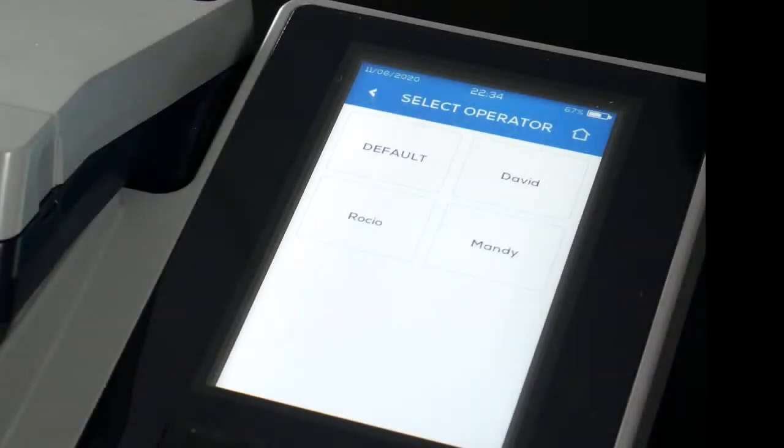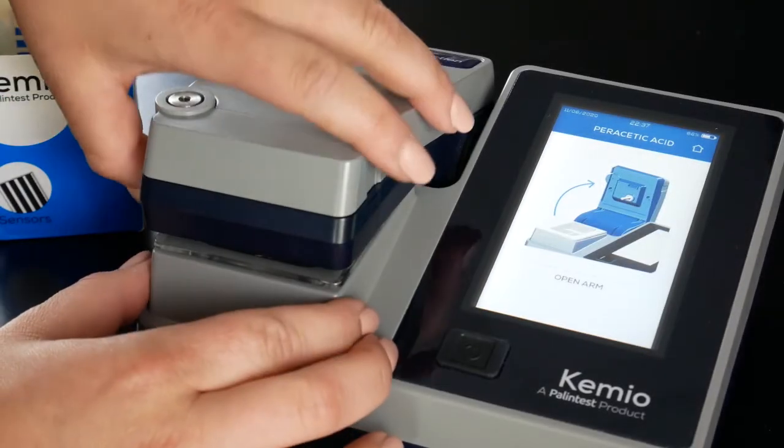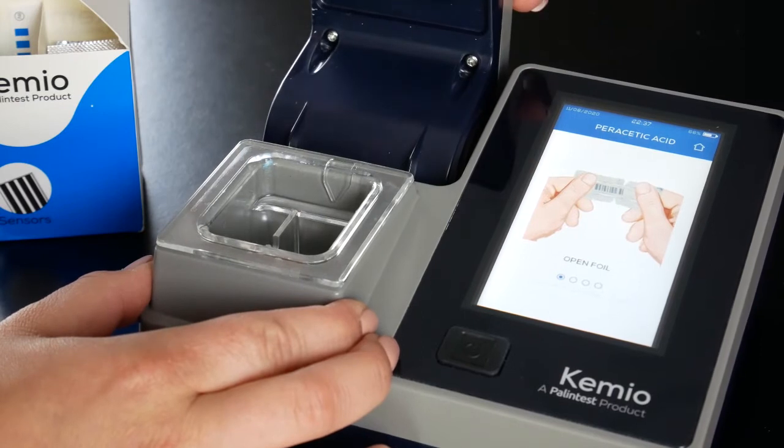If set up, select the operator and label. Open the instrument arm. You will be prompted to insert the sensor.